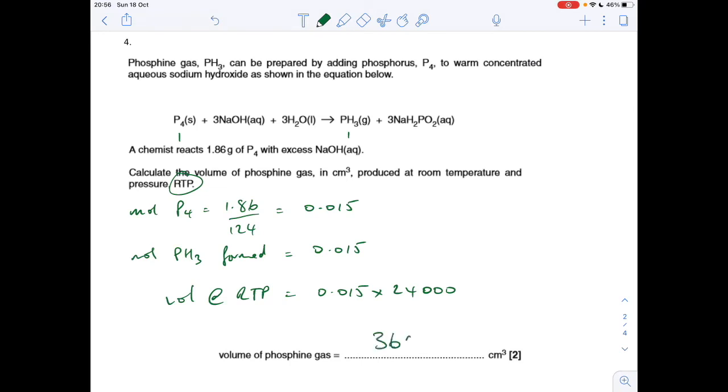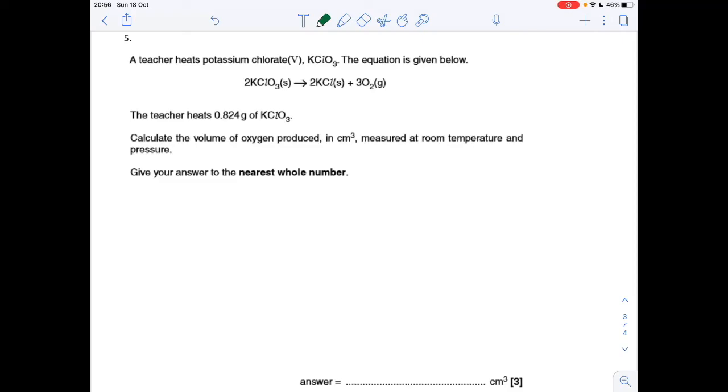Number five is another reacting volumes question. Again, it's at room temperature and pressure, so it's not ideal gas, and we've got to give the answer in cm cubed to the nearest whole number. The teacher heats 0.824 grams of potassium chlorate 5, how much oxygen is produced. That's a 2 to 3 ratio.